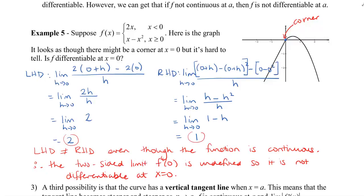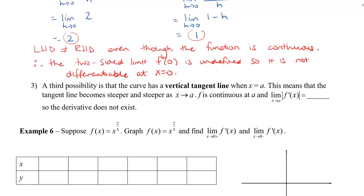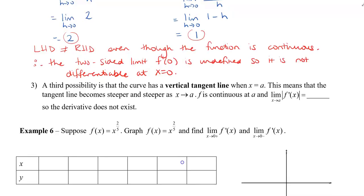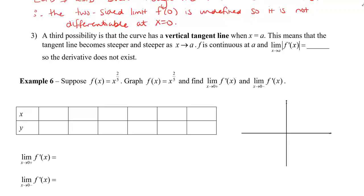Our third case is when the curve has a vertical tangent line when x equals a — the tangent line becomes steeper and steeper as x approaches a. f is continuous at a, and the limit of the absolute value of f prime of x as x approaches a equals infinity, so the derivative does not exist. Suppose f of x equals x to the power of 2 fifths. Let's graph it and find the derivative as x approaches 0 from the right and left. We'll use numbers rather than the formal definition.